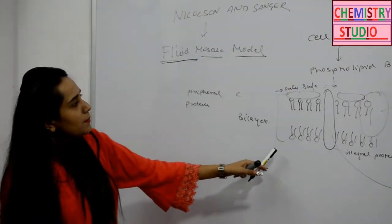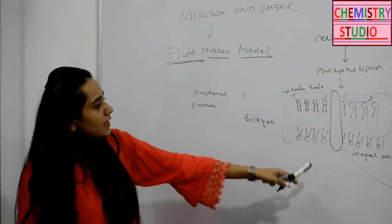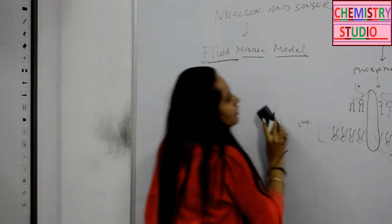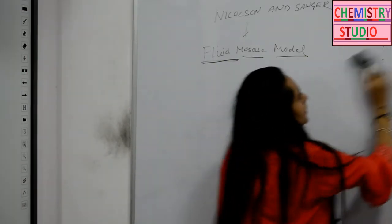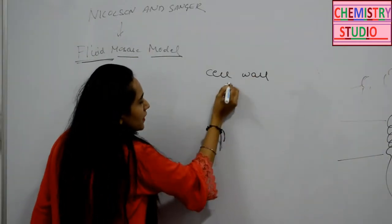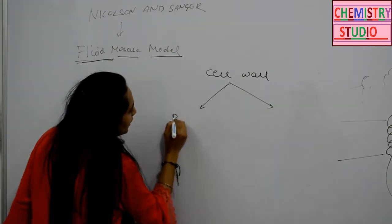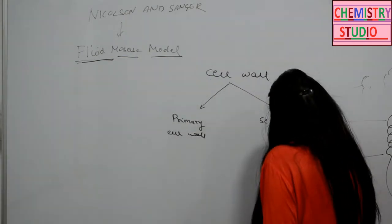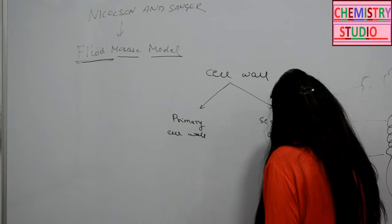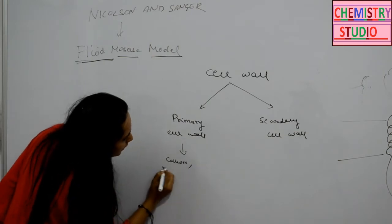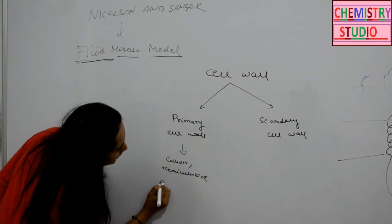The cell membrane is present in both plant and animal cells. Plant cells have an additional outer covering — that is the cell wall. Regarding cell wall structure, there are two categorizations: the primary cell wall and the secondary cell wall. The primary cell wall is made up of cellulose, hemicellulose, and pectin.